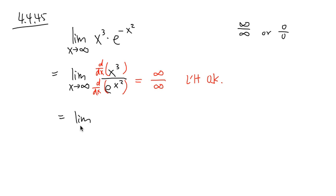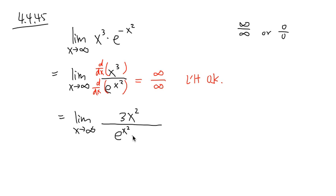This is the same as the limit when x is going to infinity. On the top, the derivative of x to the third power is 3x squared. For the bottom, the derivative of e to the x squared — you first write e to the x squared, then multiply by the derivative of the inner function. The derivative of x squared is 2x, so you multiply by 2x because of the chain rule.